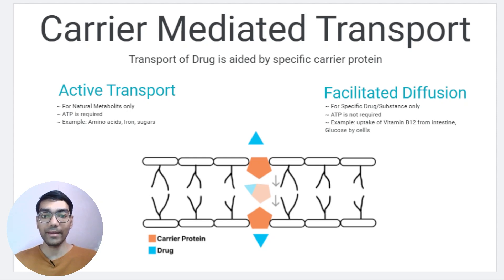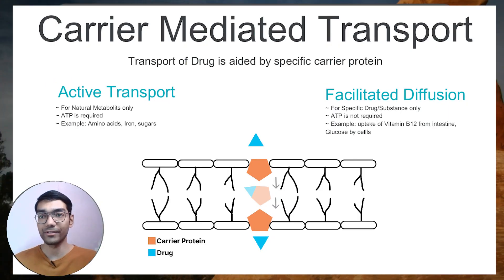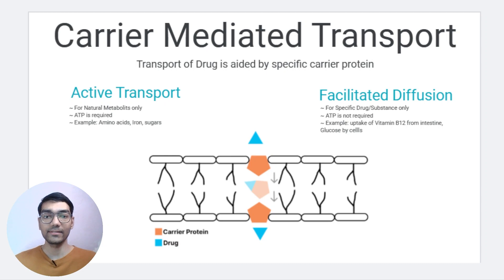There are two types of carrier-mediated transport: active transport and facilitated diffusion. In active transport, the carrier protein must actively use energy in the form of ATP to transport the drug across the cell membrane. Active transport is useful when a drug or chemical substance has to move against the concentration gradient — that is, from low to high concentration across the cell membrane.